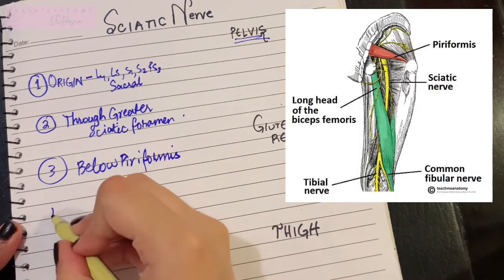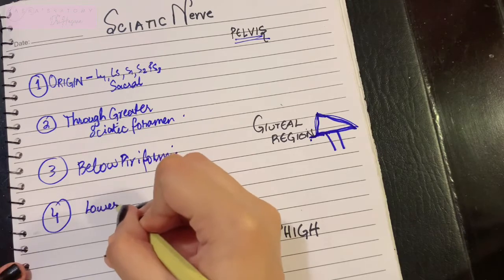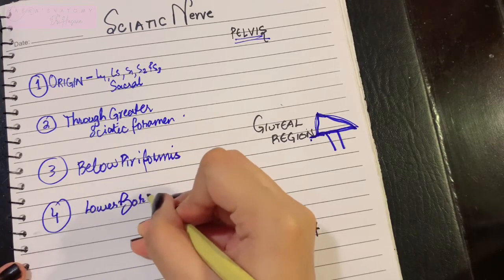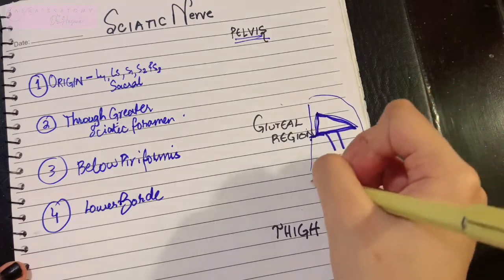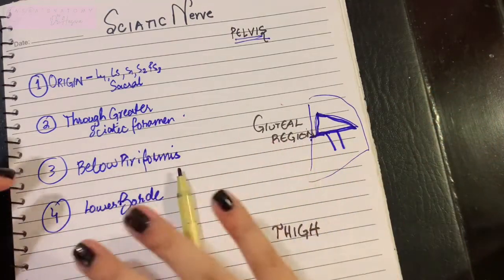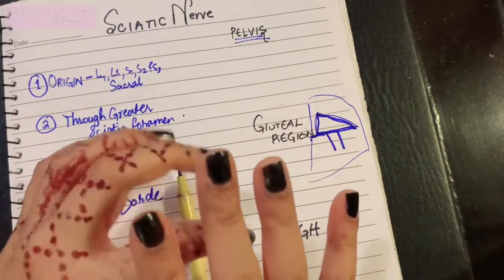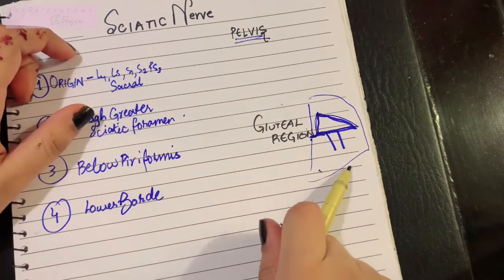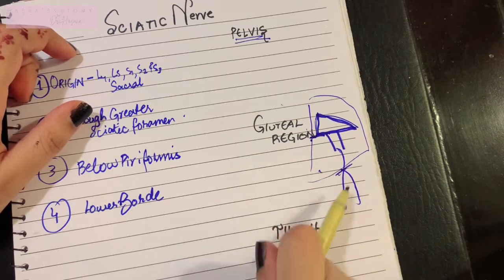Part number four: the sciatic nerve now exits the gluteal region at the lower border of gluteus maximus. We all studied in the gluteal region that the gluteus maximus is a large muscle covering the entire gluteal region, and all of the other muscles are lying beneath the gluteus maximus. Once it comes to the lower border of gluteus maximus, it has entered the thigh.